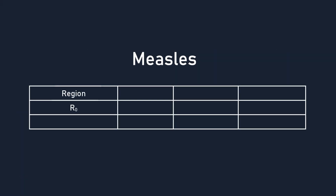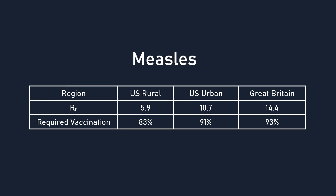For example, data shows that in the past, measles had an R0 value of around 5.9 in rural areas of the United States, but 10.7 in urban areas of the United States, and 14.4 in Great Britain. Using our knowledge, we can find that these correspond to required vaccination rates of 83%, 91%, and 93% respectively. This is why complete eradication of measles has been so difficult.